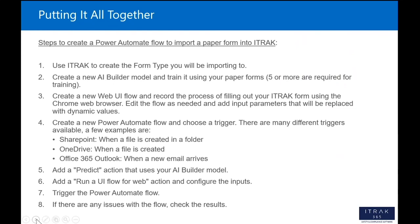Taking all those technologies and putting them together, here are the steps to create a Power Automate flow to import a paper form into iTrack. Step one: use iTrack to create a new form type — also known as a process flow — that you'll be importing into the system. Step two: go into Power Automate, navigate to the AI Builder section, and create an AI Builder model. Step three: train it using a number of your paper forms. You need a minimum of five forms to train the model, but more is better for higher accuracy.